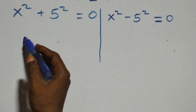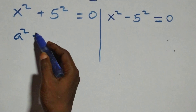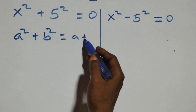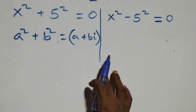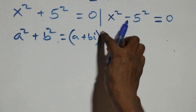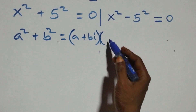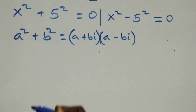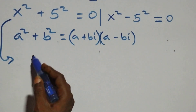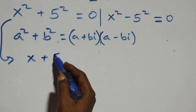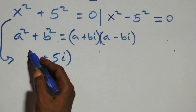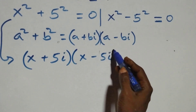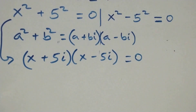Solving the first case: we have a squared plus b squared, which factors as (a plus bi) times (a minus bi). Following this, it becomes (x plus 5i) times (x minus 5i) equals to 0.